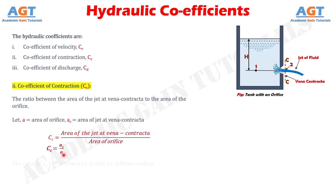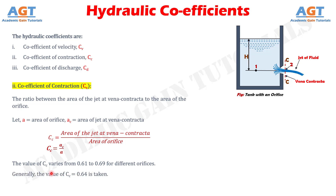The value of coefficient of contraction CC varies from 0.61 to 0.69 depending on shape and size of the orifice and head of liquid under which flow takes place. In general, the value of coefficient of contraction CC may be taken as 0.64.